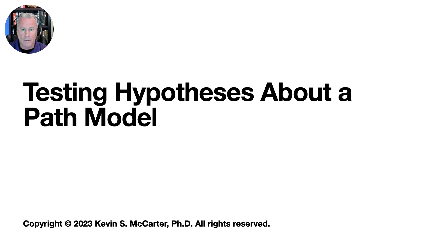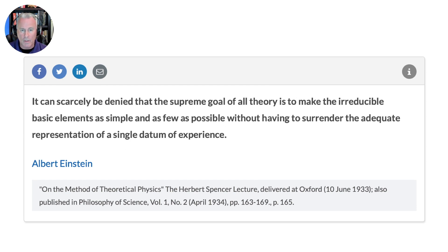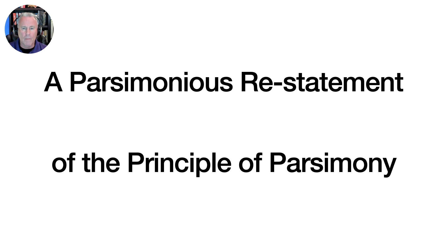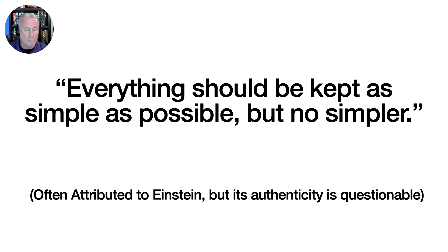This modeling approach is consistent with the principle of parsimony, a heuristic principle that says to select the simplest hypothesis or model possible from among those having equivalent explanatory power or predictive accuracy. Einstein expressed the principle this way: it can scarcely be denied that the supreme goal of all theory is to make the irreducible basic elements as simple and as few as possible without having to surrender the adequate representation of a single datum of experience. A parsimonious restatement often attributed to Einstein is: everything should be kept as simple as possible, but no simpler.